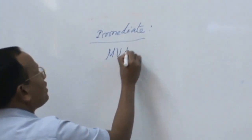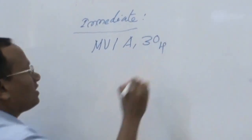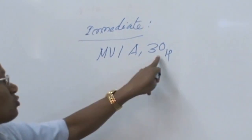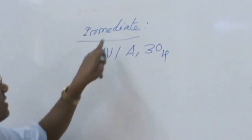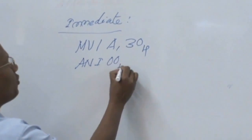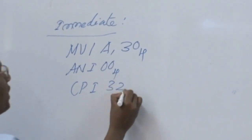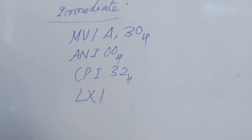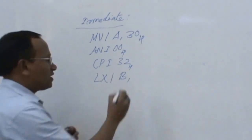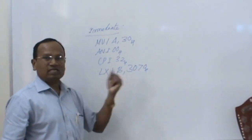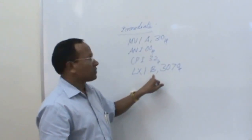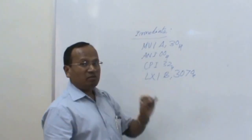For example, if I write MVI A, 30H — this 8-bit data 30H is copied into the accumulator. The 'I' is also present in the mnemonic, so this is immediate addressing mode. There are many other examples: ANI 00H, CPI 32H. Also, LXI — the syntax is LXI register-pair. If I write LXI B, 3070H, this 3070H is 16-bit hexadecimal data to be copied into B and C respectively. All these examples are under immediate addressing mode.